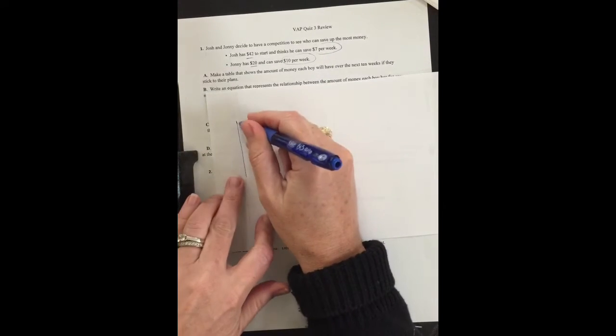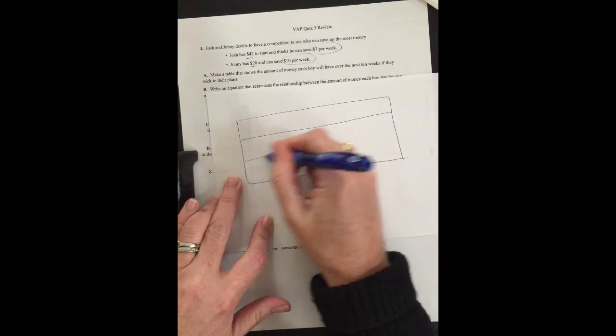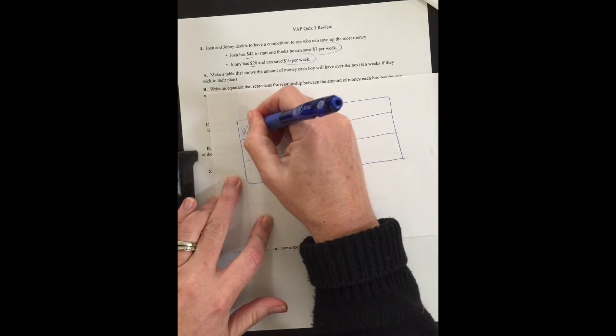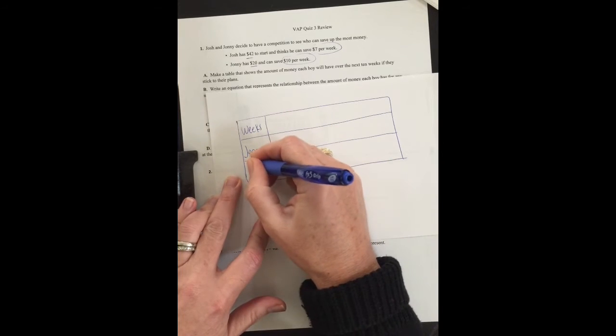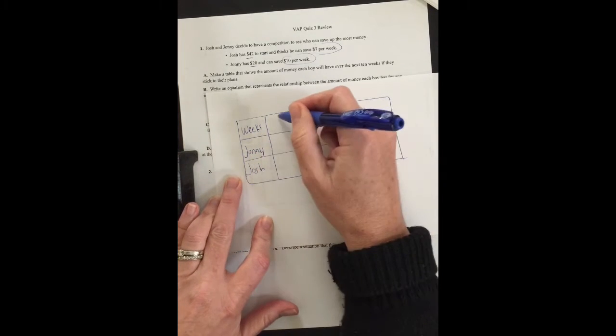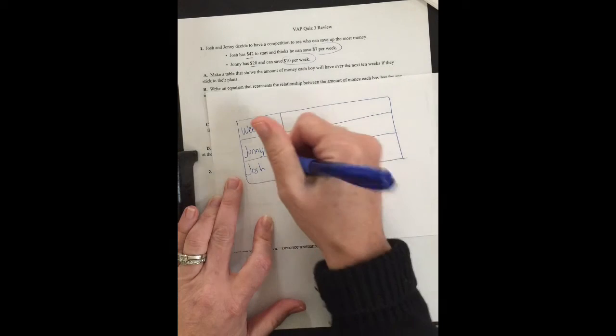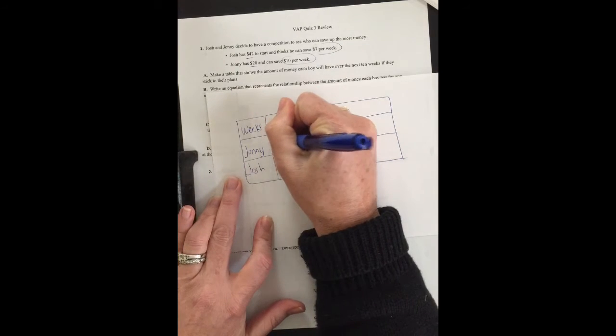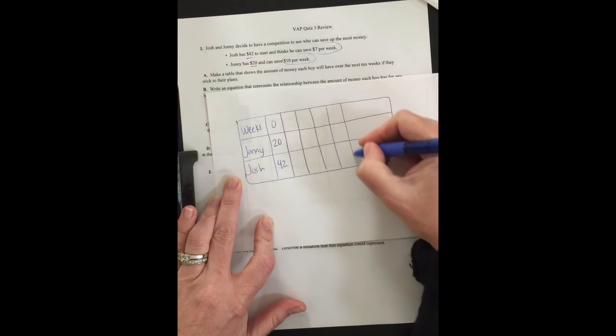For this I'm going to use some scratch paper since it won't fit on here and I'm going to make a table. It's going to have three layers. This top layer is going to be weeks. This is going to be Johnny. This is going to be Josh. If we look at the very beginning before we start, it says that Josh has $42 and Johnny has $20.